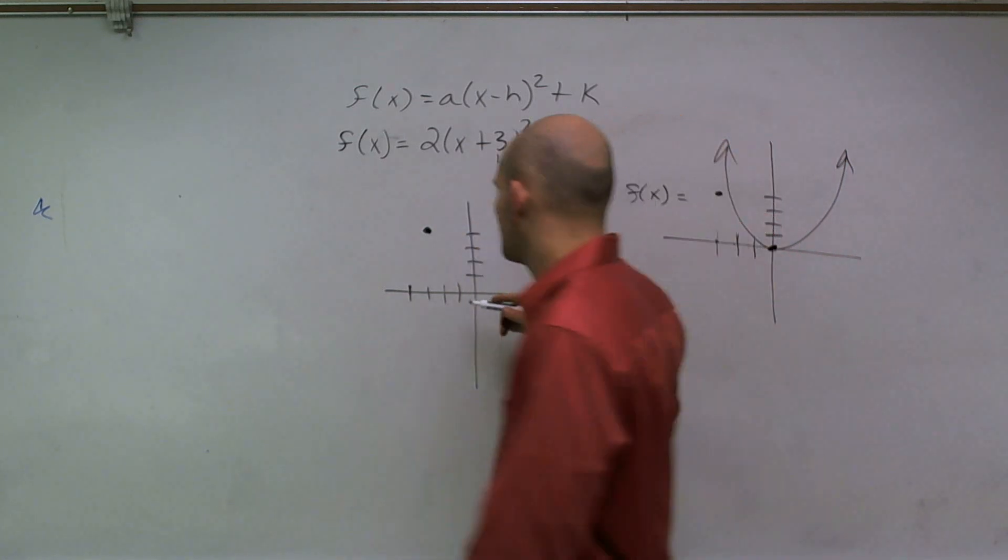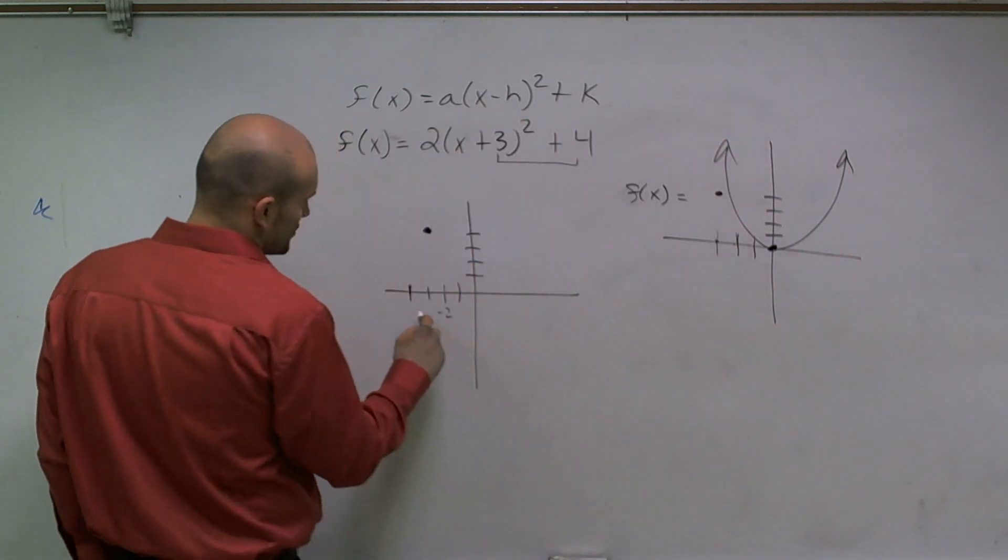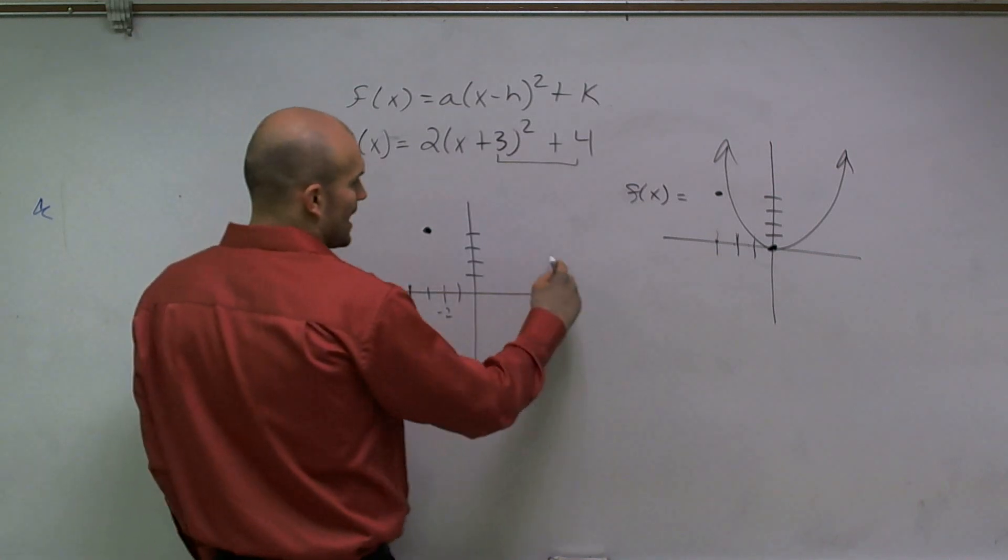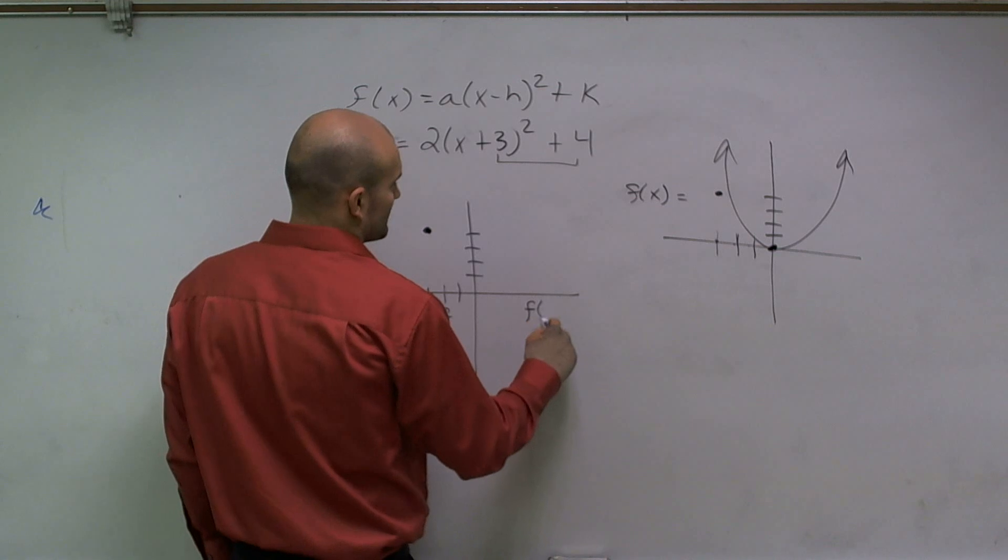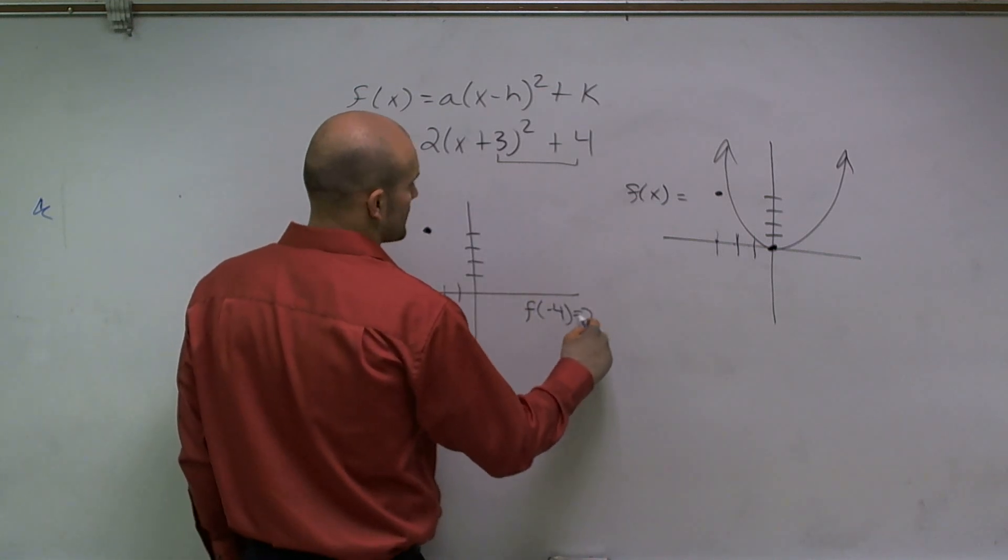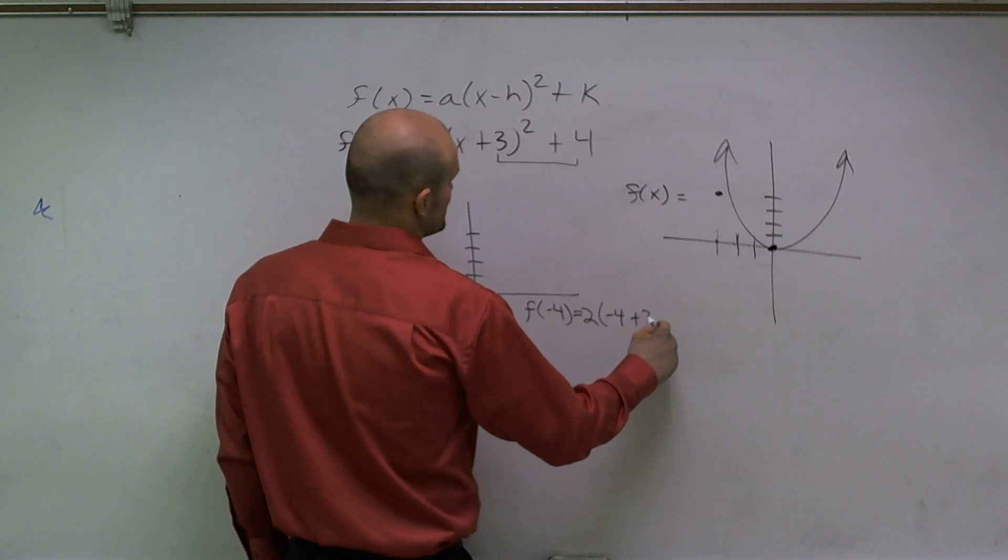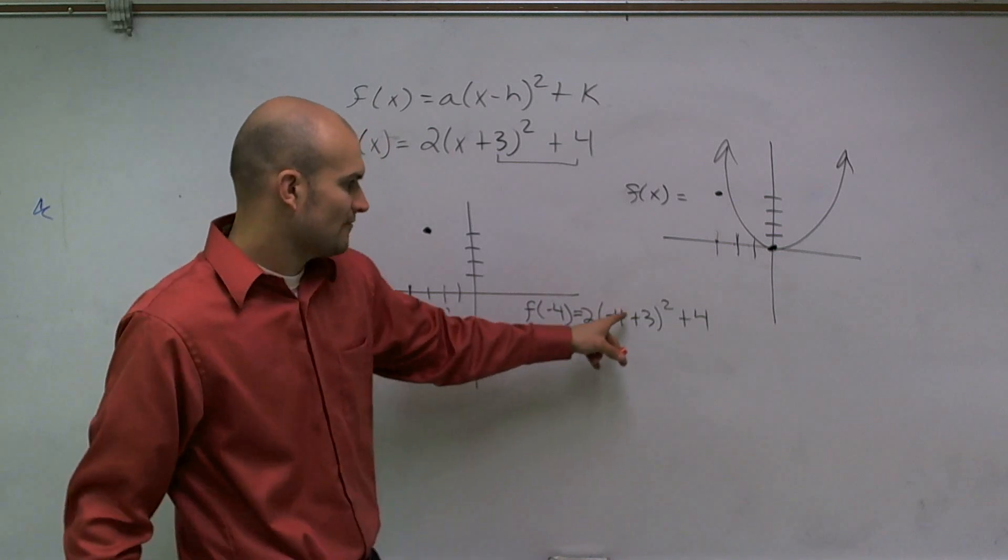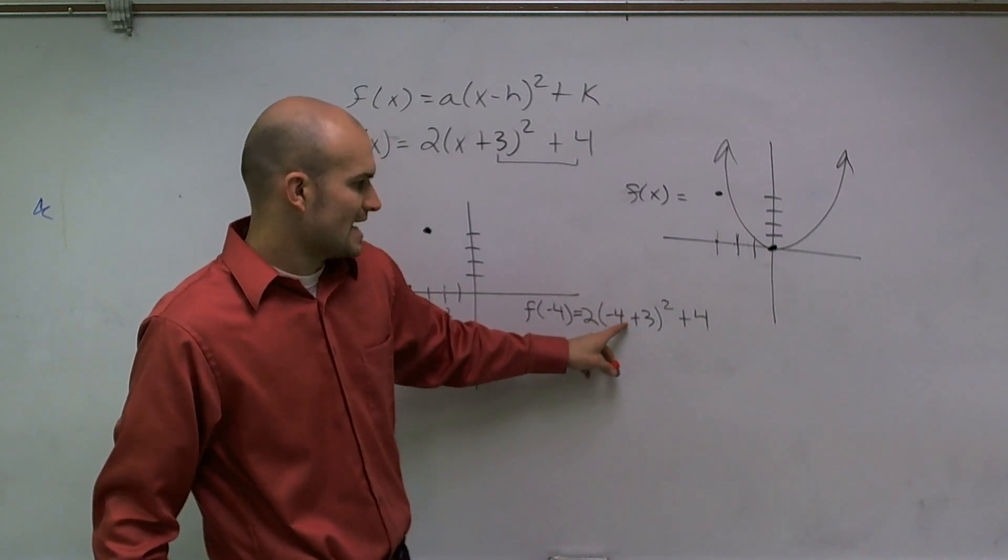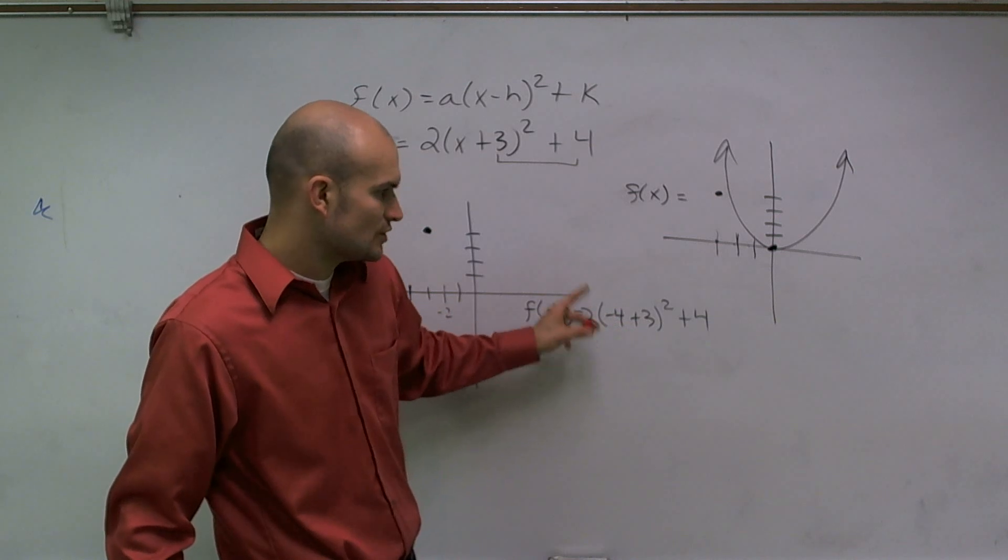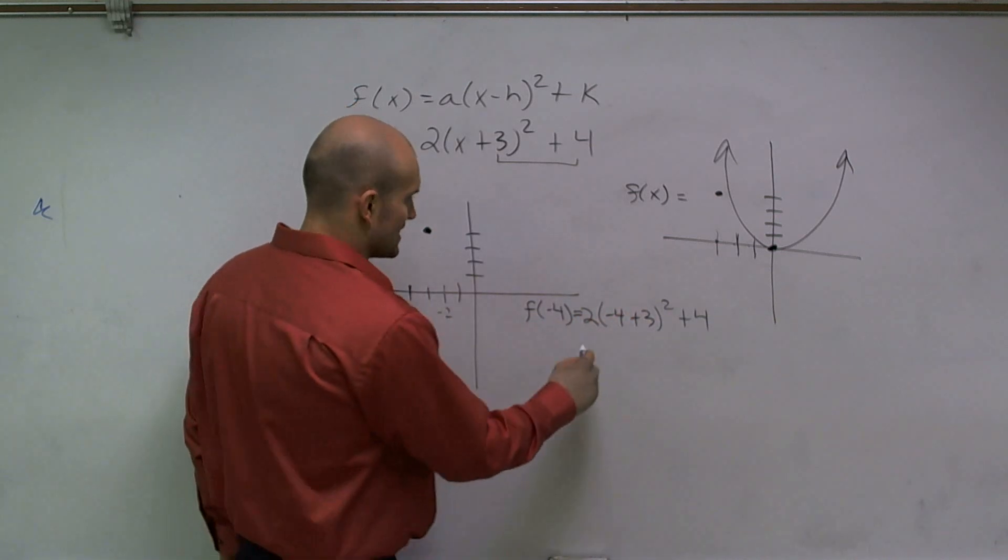So let's pick negative 2 and negative 4. So now if I do f—if I evaluate my function for f of negative 4, I get 2 times negative 4 plus 3 squared plus 4. Well, negative 4 plus 3 is negative 1. Negative 1 squared is 1. 1 times 2 is 2. 2 plus 4 is 6.